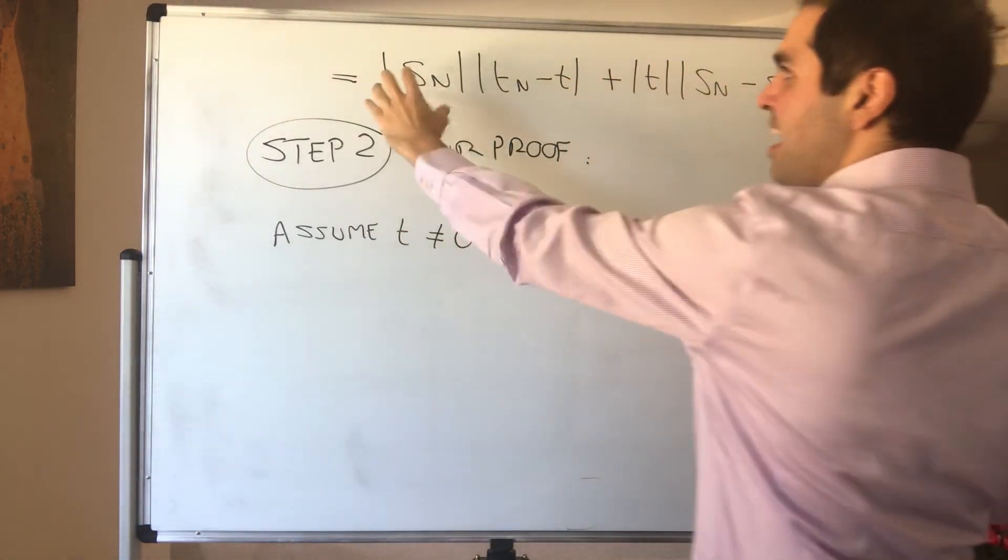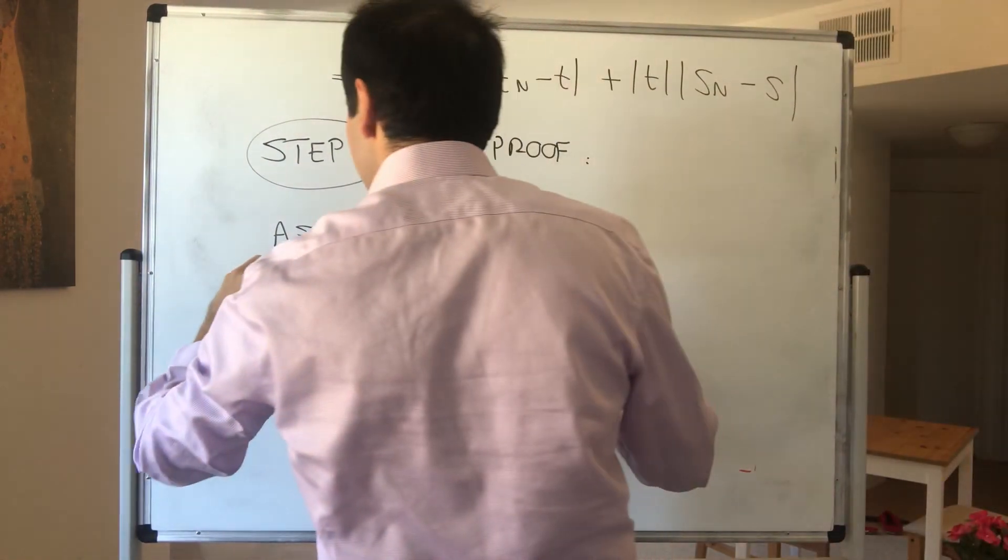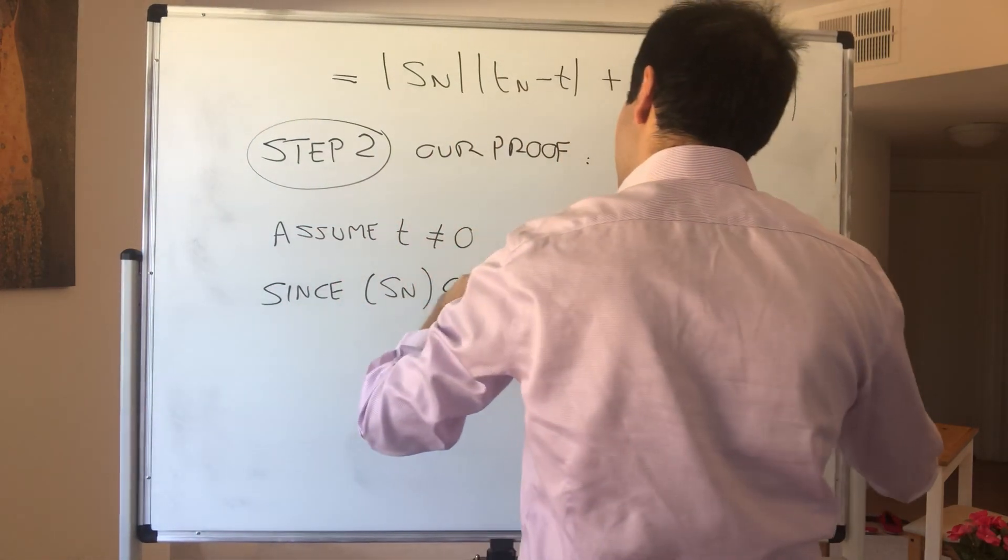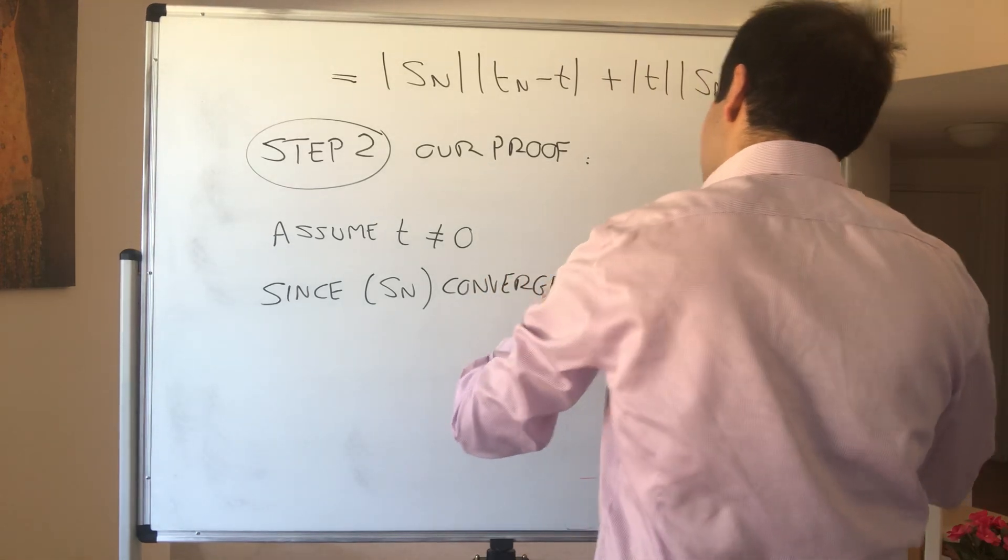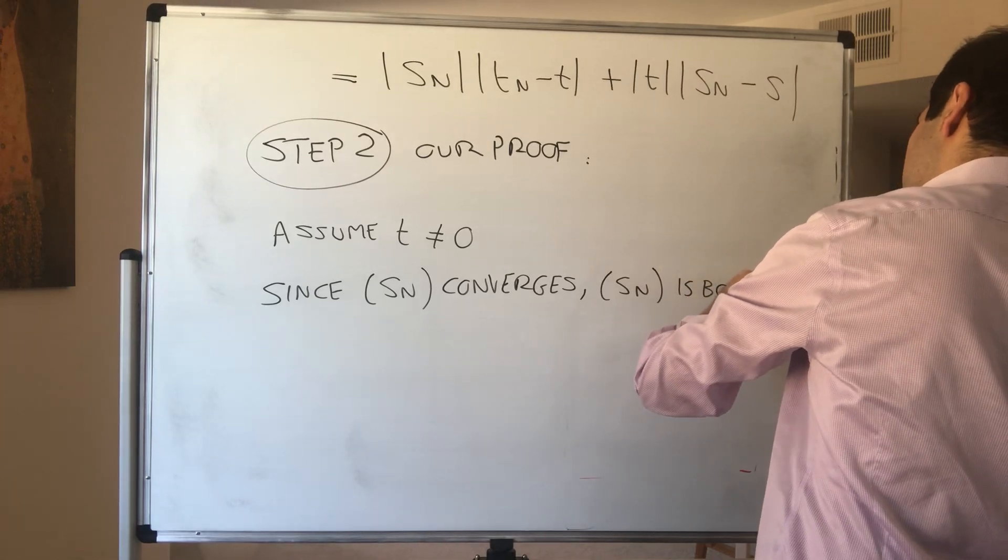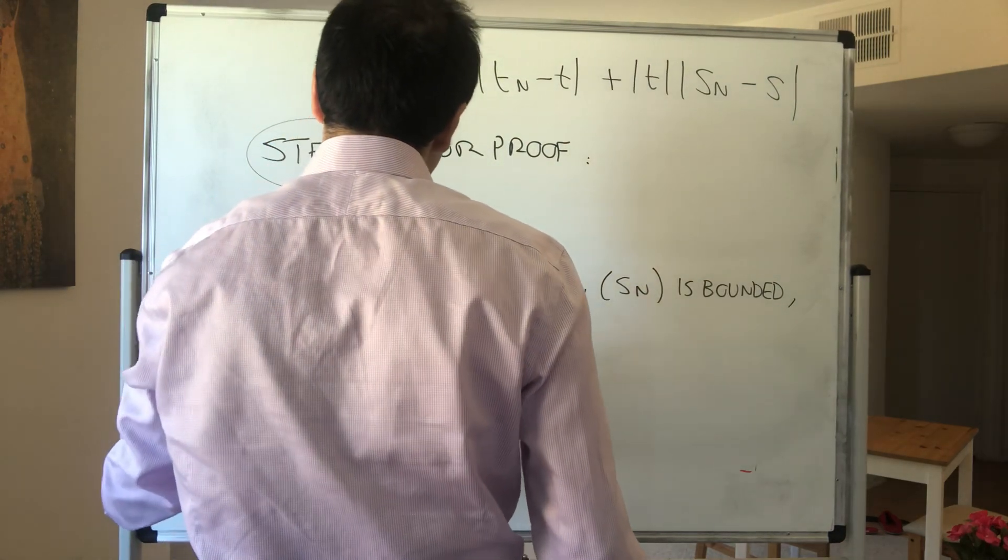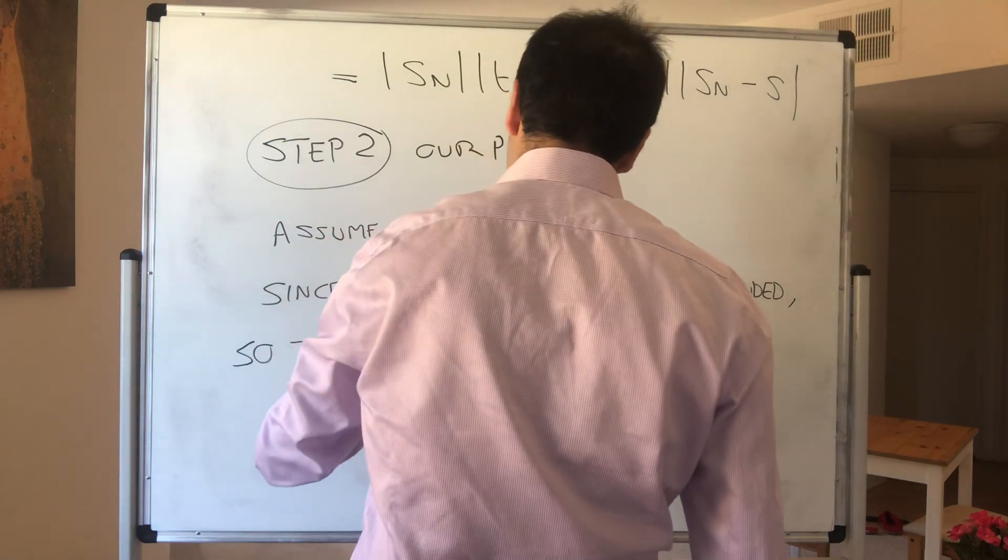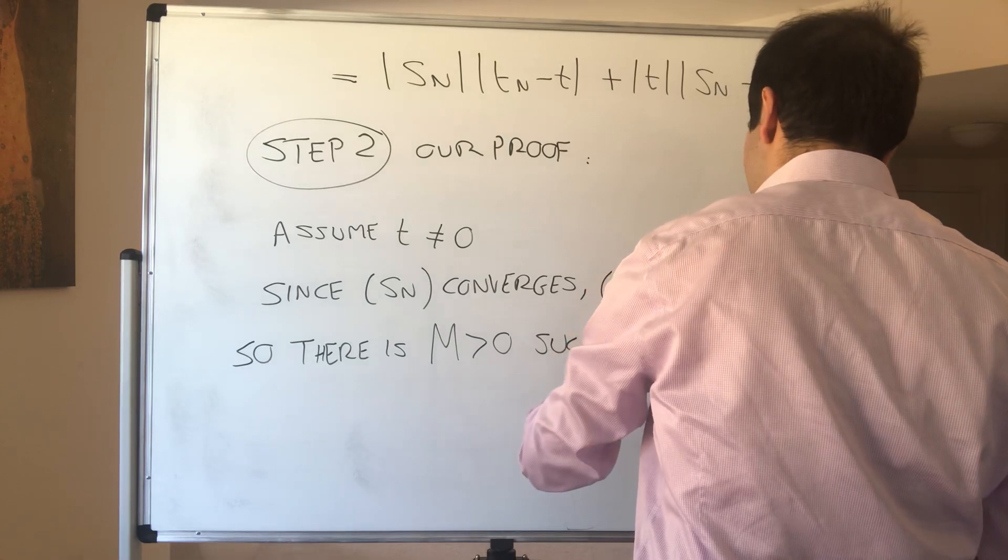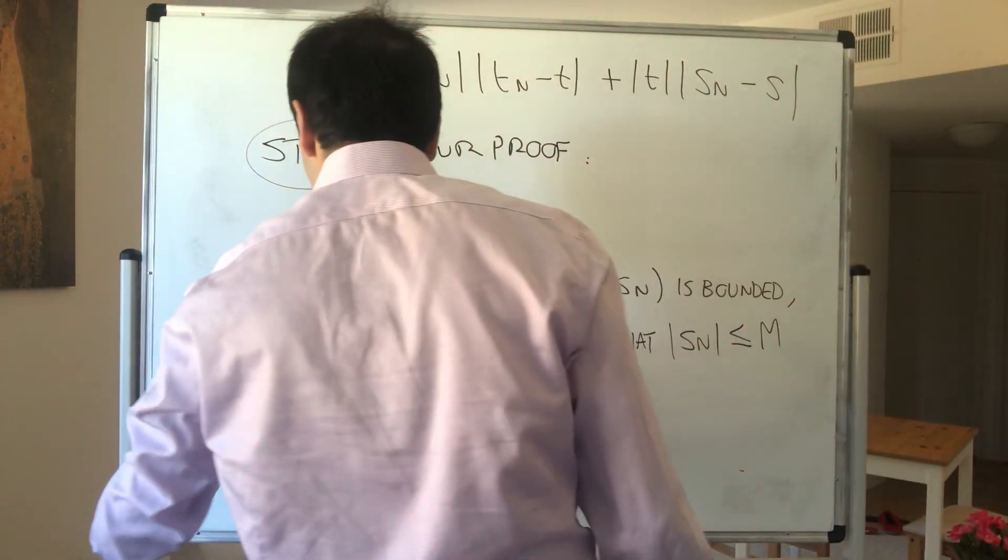Moreover, as I said, what's nice is this term doesn't blow up to infinity. It's actually bounded, and that's because Sn converges. So since Sn converges, the sequence Sn is bounded, meaning that there's a positive constant capital M, M positive, such that absolute value of Sn is less than or equal to capital M for all n.